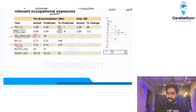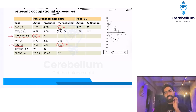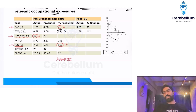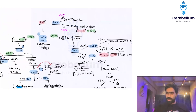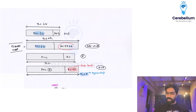Look at TLC — it is more than 80%. Since TLC is more than 80%, this patient is having pseudo-restriction. Pseudo-restriction is generally due to severe obstruction — most commonly emphysema — but we need to confirm it.